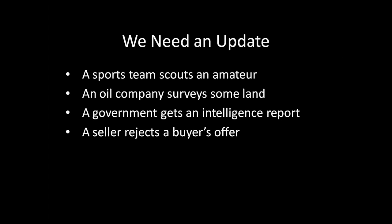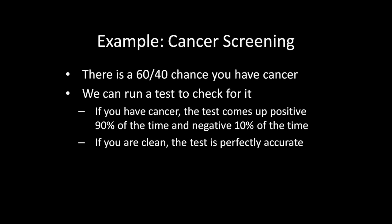Bayes' Rule comes up even in simultaneous move games of incomplete information, so we still need to know it before we close out this unit. To illustrate how Bayes' Rule works, let's look at an example: cancer screenings. Imagine there's a 60% chance that you have cancer and a 40% chance that you're clean — prior information about how healthy you are. We can get more information by running a test for cancer.